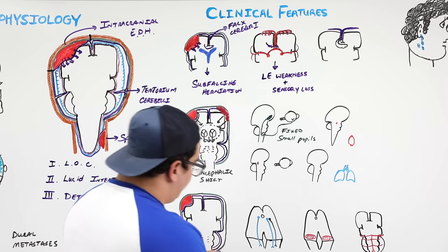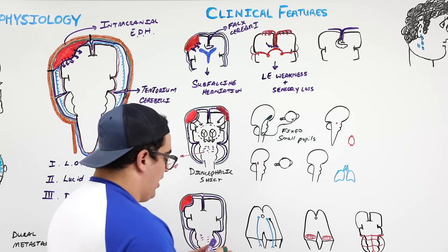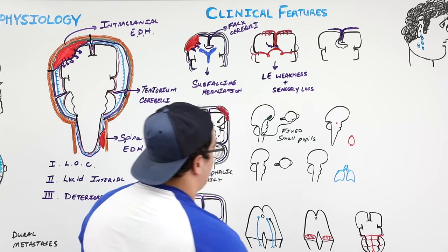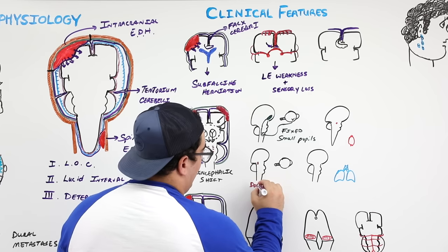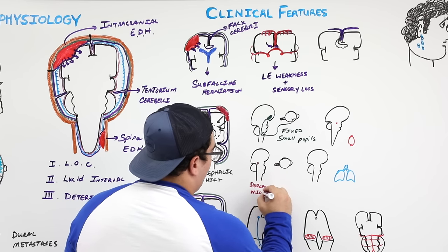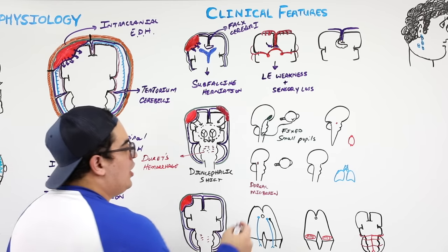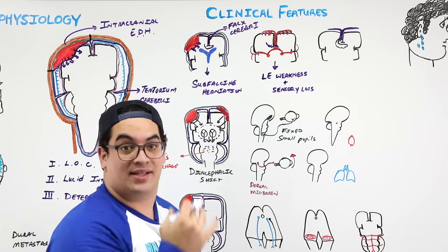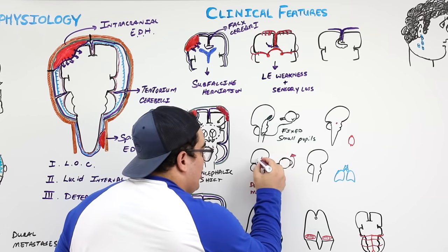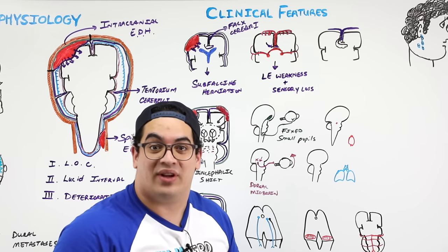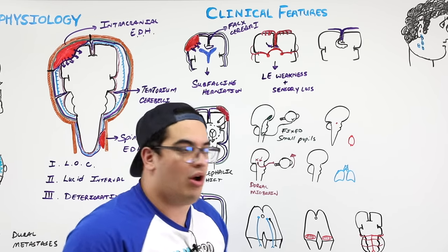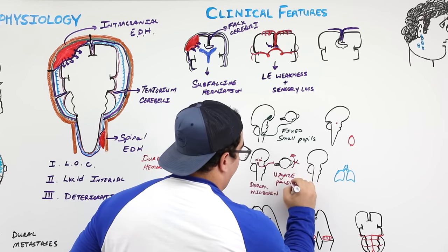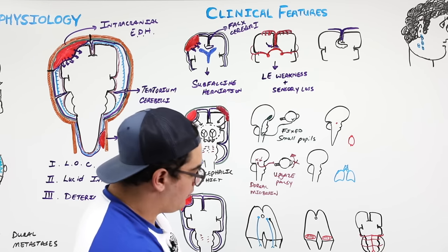The diencephalic shift can also compress the dorsal aspect of the midbrain, which contains the vertical gaze center. This controls the ability to move the eyeball upward. If the vertical gaze center is damaged, the patient cannot look upward — this is called an upgaze palsy.